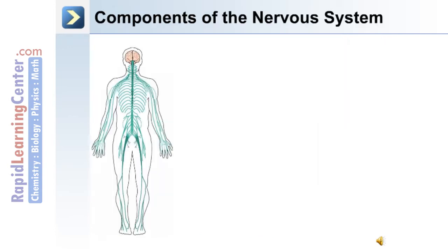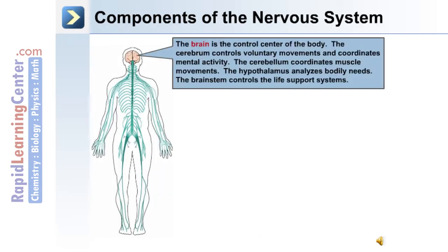The brain is a control center of the body. Different regions include the cerebrum, which controls voluntary movements and coordinates mental activity; the cerebellum, which coordinates muscle movements; the hypothalamus, which analyzes the needs of the body; and the brain stem, which contains key control centers like the respiratory center and the cardiac center.